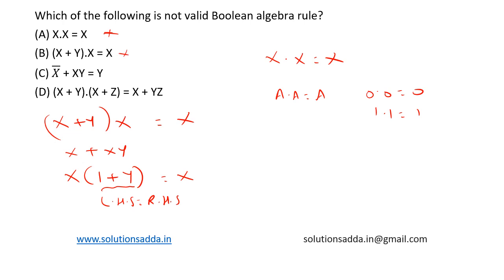Now let's see option C: X bar plus XY is equal to Y. This is the option. Now based on distributive law, A plus BC is equal to A plus B into A plus C. This is distributive law.